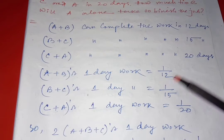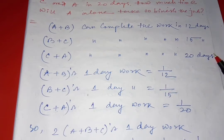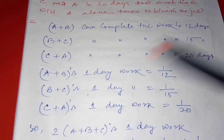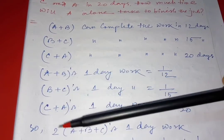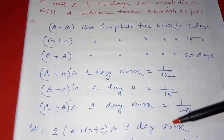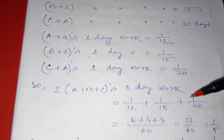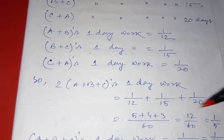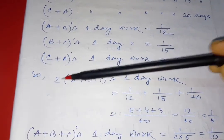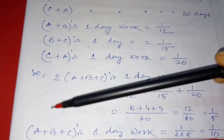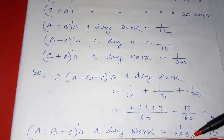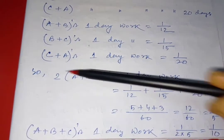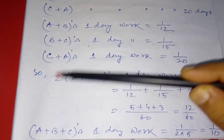Now if we add all of them to find A plus B plus C's combined work, we notice 2 A's, 2 B's, and 2 C's are there. So 2 times (A plus B plus C)'s one day work equals 1 by 12 plus 1 by 15 plus 1 by 20. That comes to a total of 1 by 5. Removing the 2, we can write that A plus B plus C's one day work equals 1 by 2 times 5, which equals 1 by 10. You need to be careful with this factor of 2.